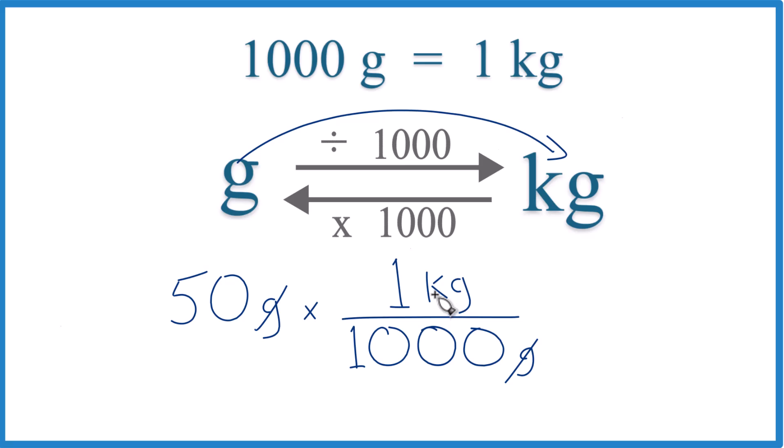50 times 1 kilogram, 50 kilograms divided by 1,000 gives us the same answer as before, 0.05 kilograms.